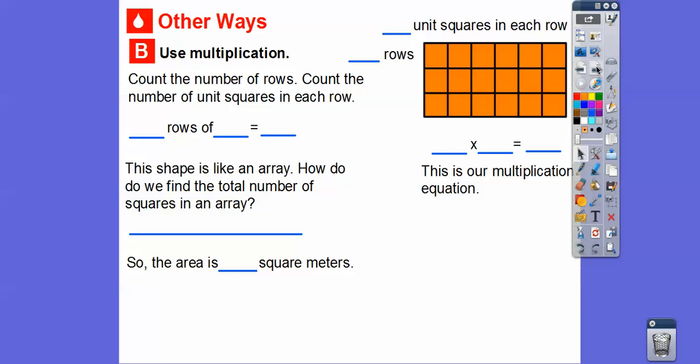And then another way is we can count the number of rows and then count the number of unit squares that are in each row. So we can then use multiplication on this one. So there's three rows, there's six unit squares in each row. So that's going to give us three rows of six. And so this shape is like an array. So we've done arrays before. So how did we find the total number of squares in an array? Well, we just multiplied. So we're going to go ahead and multiply three times six, and that gives us 18. So the area is 18 square meters.